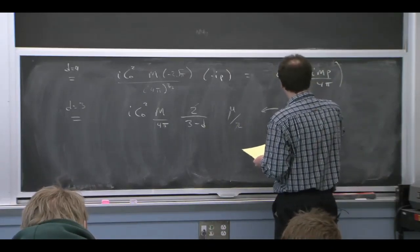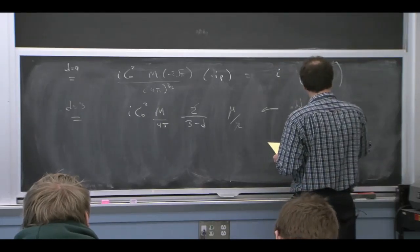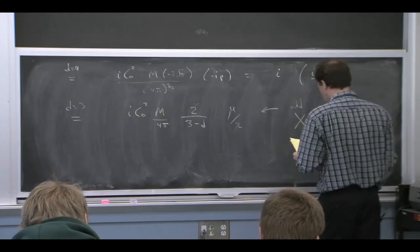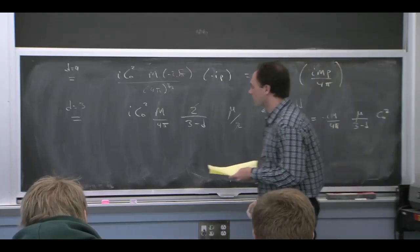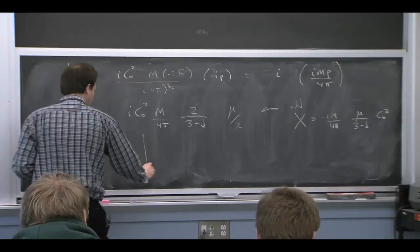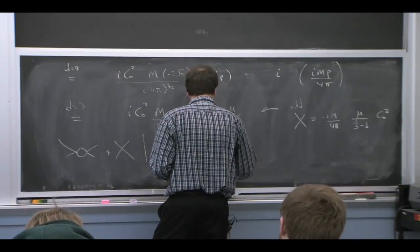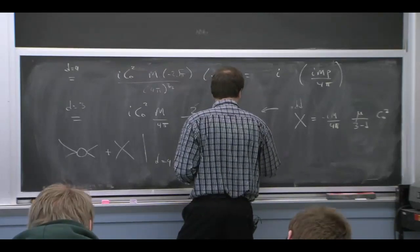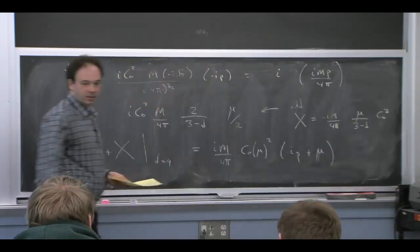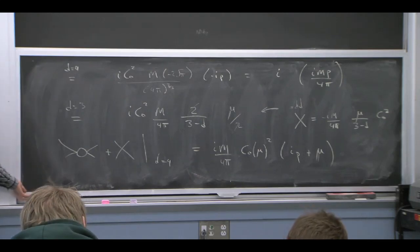And so what this scheme says is to add a subtraction for this guy. So what we do is we add a counterterm that looks like minus i m over 4 pi mu at 1 power of mu over 3 minus d c0 squared. And then if we take the graph plus the counterterm and we set d equal 4, which is where we actually want to do physics, lo and behold, in this approach, we get actually the same answer as in our off-shell momentum subtraction scheme. And that's just really because this scheme tracks the power correction, or the power divergence, just like the off-shell momentum subtraction did.